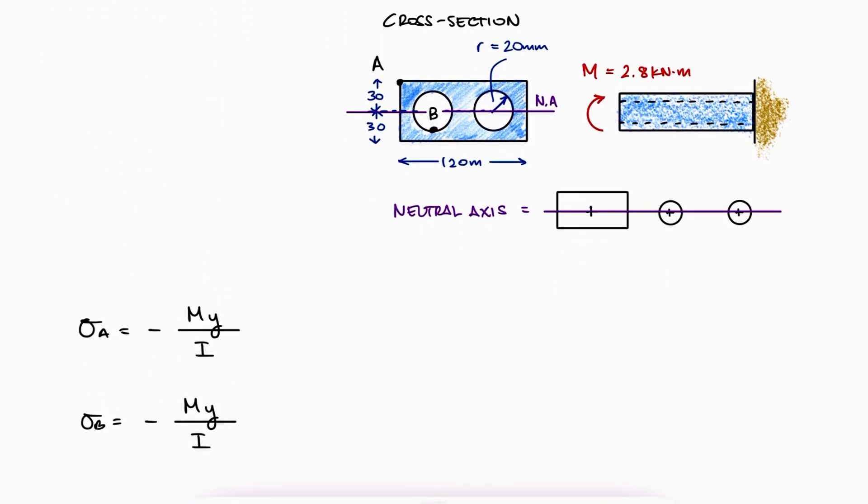And the distance from the neutral axis to B is minus 20 mm.